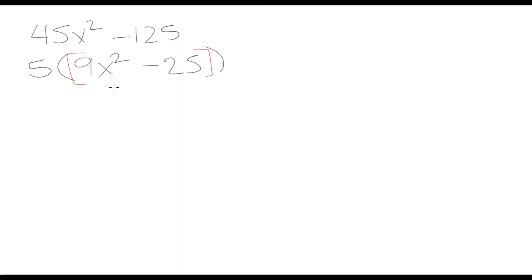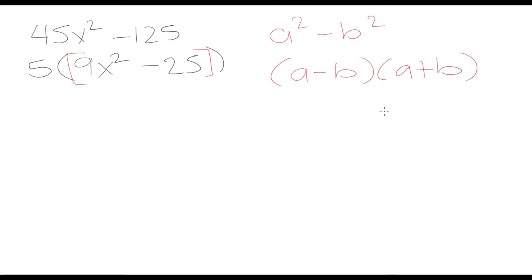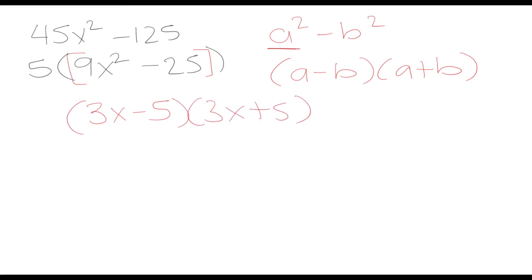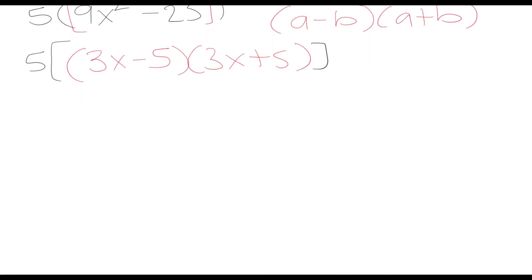Inside the brackets we now have a difference of two squares. 9x squared is a perfect square because 3x times 3x equals 9x squared, and 25 is a perfect square because 5 times 5 equals 25. Using the formula a squared minus b squared equals a minus b times a plus b, our a is the square root of 9x squared which is 3x, and our b is the square root of 25 which is 5. So the factored form is 5 times 3x minus 5 times 3x plus 5.